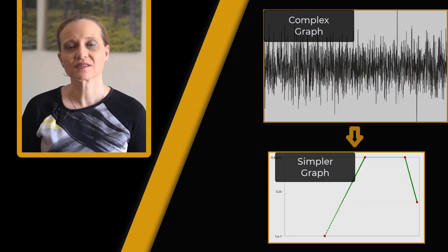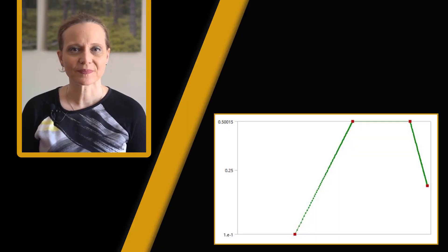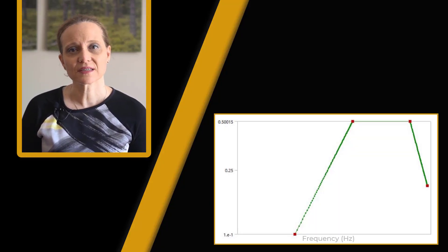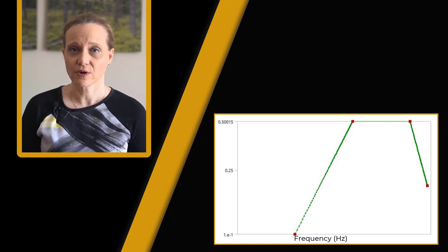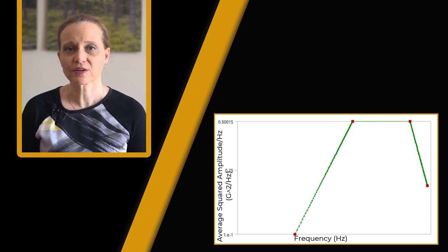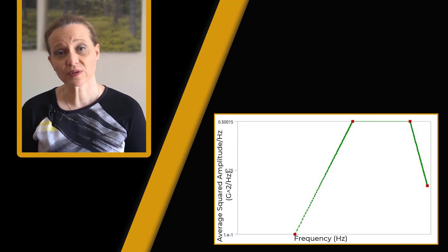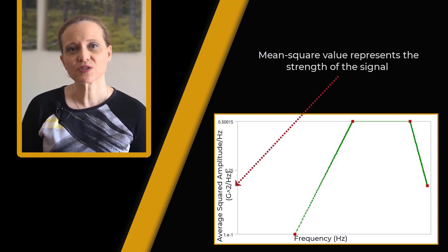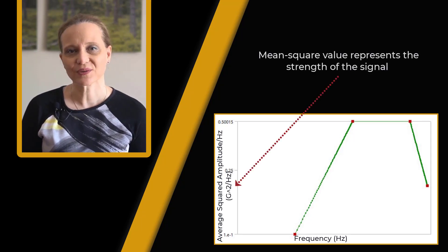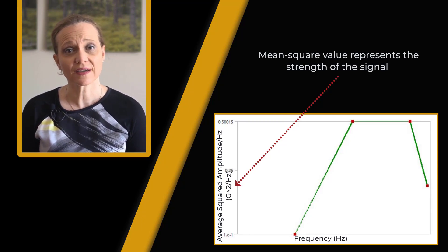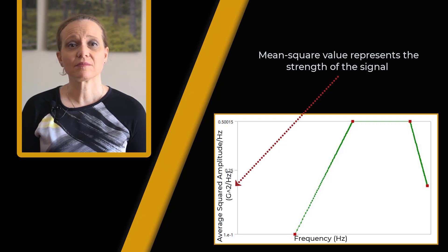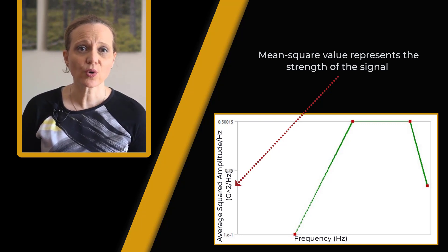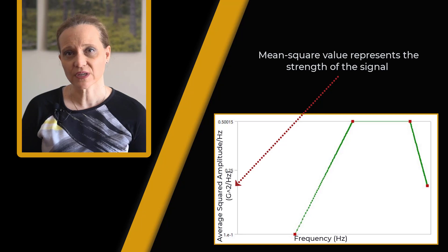How do we understand such a PSD curve? The horizontal axis is frequency with unit of hertz. The vertical axis is the average squared amplitude per hertz, which is amplitude unit squared over hertz. The use of mean square value is a suitable indicator for the strength of the signal, as the mean value would be closer to zero and have a sign, whereas the mean square value is always positive and can be used for different frequencies.